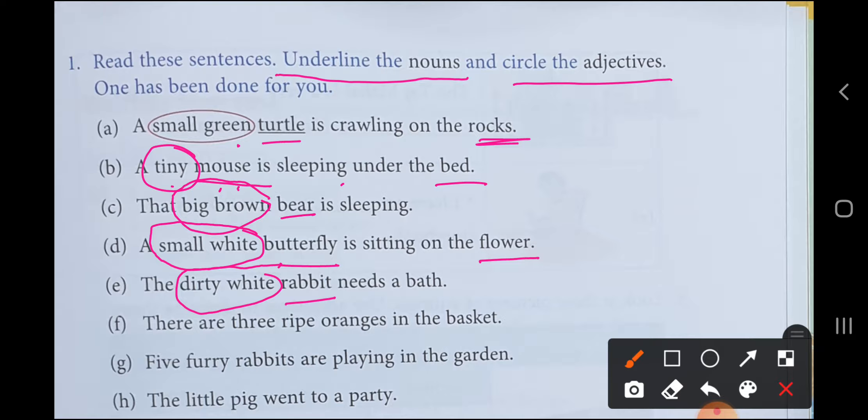Next, there are three ripe oranges in the basket. Oranges, name of fruit. Basket, name of thing, this is noun. So how are the oranges? Three ripe. I told you that anything describing how something is or how many there are, both are adjectives. Quantity or quality - quality means describing the thing, it can be good quality or bad quality. And quantity means number, how many things there are. So these are adjectives: three ripe.